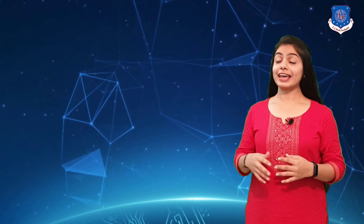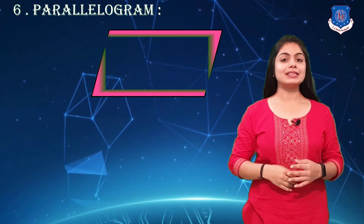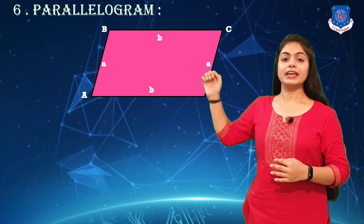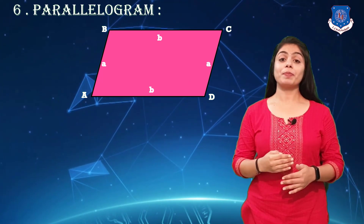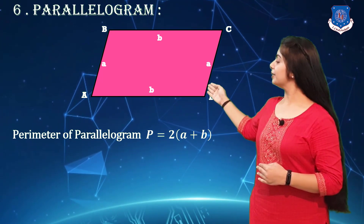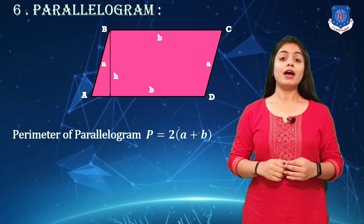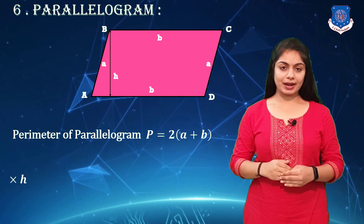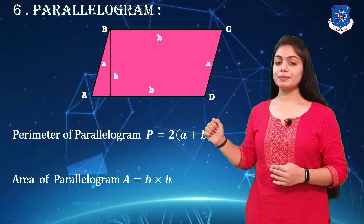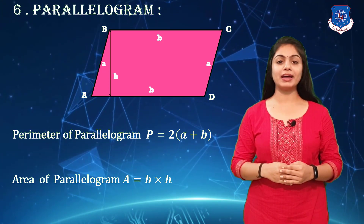Our next plane figure is the parallelogram. You can see the figure — opposite sides are equal. The perimeter of a parallelogram is 2(a + b), and the area of a parallelogram is b × h, where h is the height.